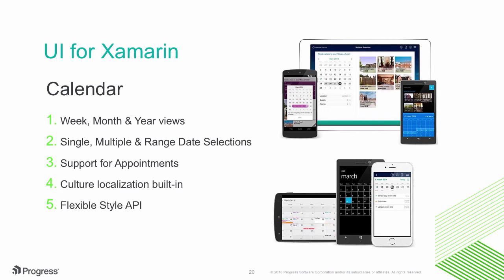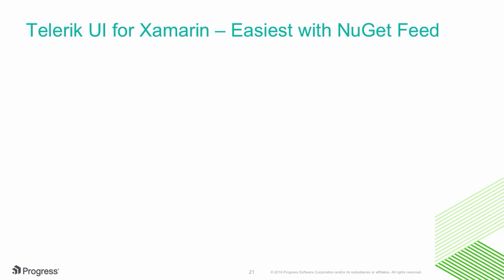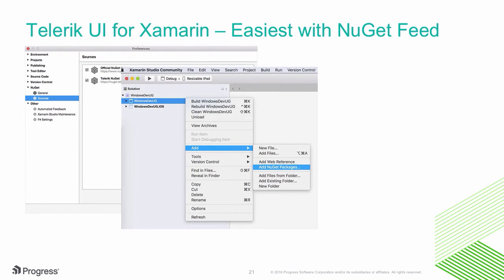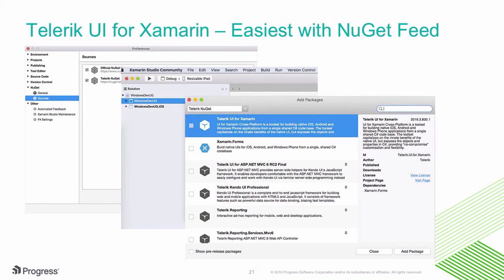How do you go about including them in your app? Simple — you can download them, but the easiest way is with the NuGet feed. Simply set up a NuGet source that points to the Telerik feed, add a NuGet package to your project, and pull in Telerik UI for Xamarin. It works the exact same way on Visual Studio as well as Xamarin Studio. Do not reinvent the wheel — use Telerik UI for Xamarin to light up all of your Xamarin apps.